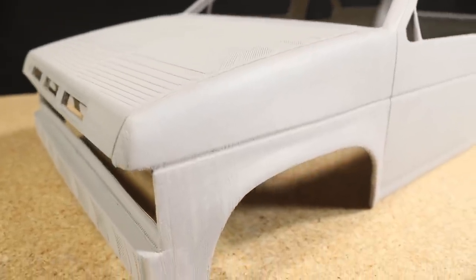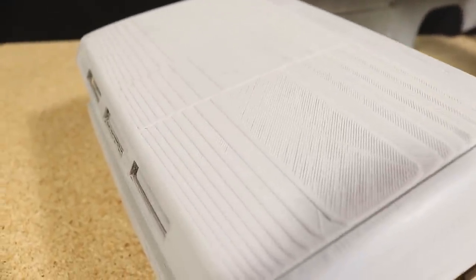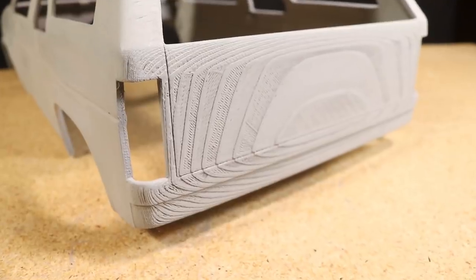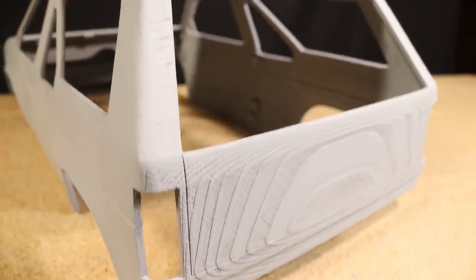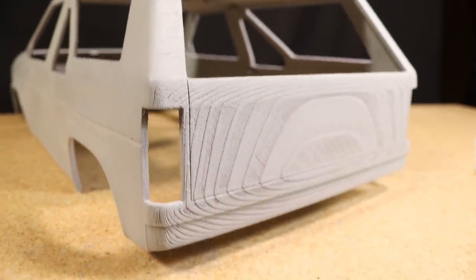Although all the sanding and heavy coats of primer has made the surface on the majority of the body nice and smooth, the exceptions are the hood and the rear of the body due to how the parts were oriented while being printed. As you can see, the 3D print lines are still very visible.